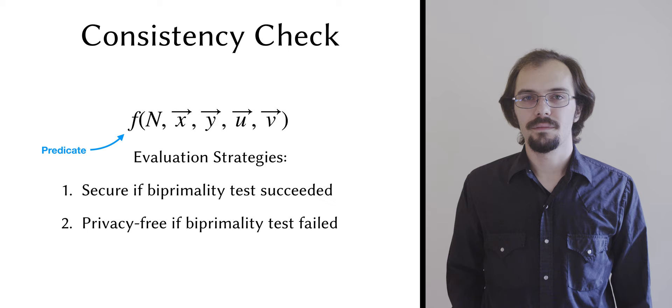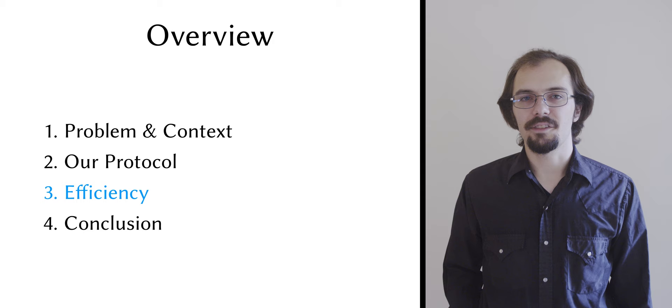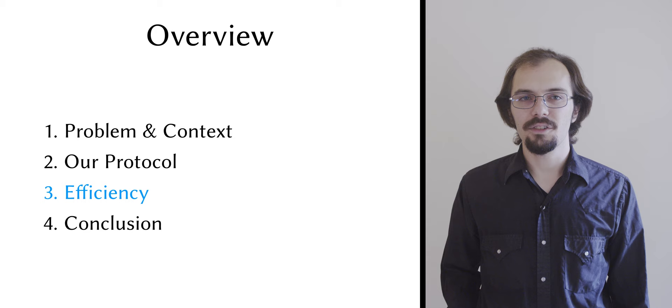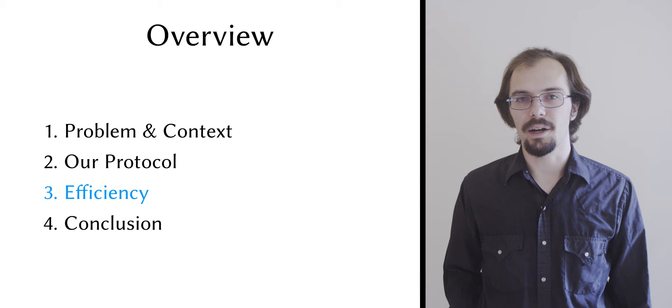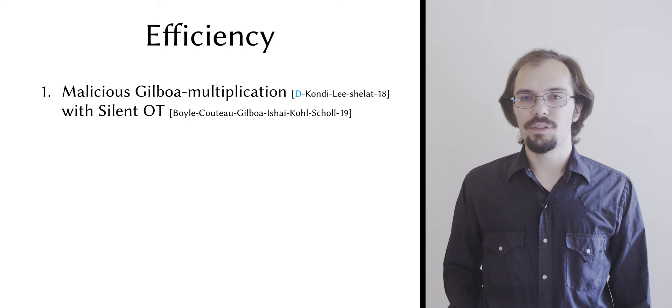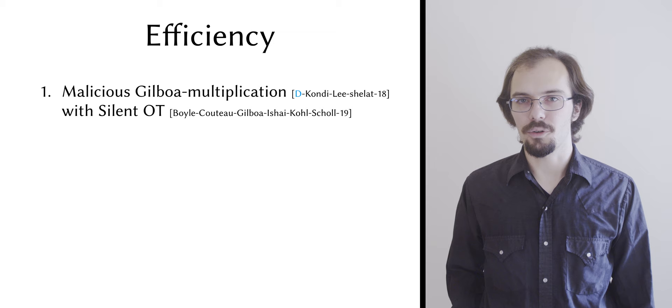Now, before I close, I want to talk a little bit about efficiency. I've been qualifying my complexity statements throughout this talk by saying that they hold if multiplication has a quadratic cost. In the malicious setting, we instantiate our multiplication functionality using an OT-based construction, derived from multipliers introduced by recent works on secure ECDSA signing. As a basis, we used the silent OT extension scheme introduced last year by Boyle, Coteau, Gilboa, Ishai, Cole, and Scholl, which has almost no overhead when amortized.